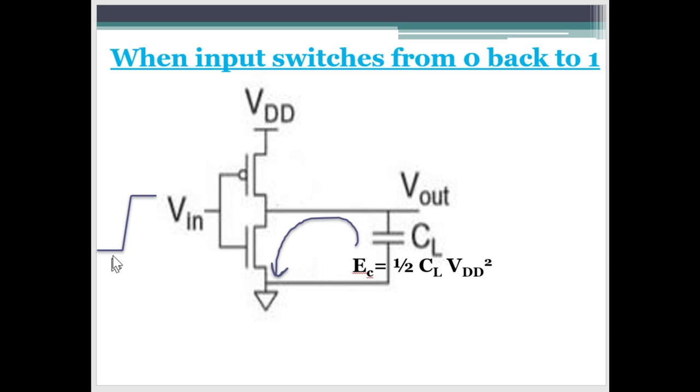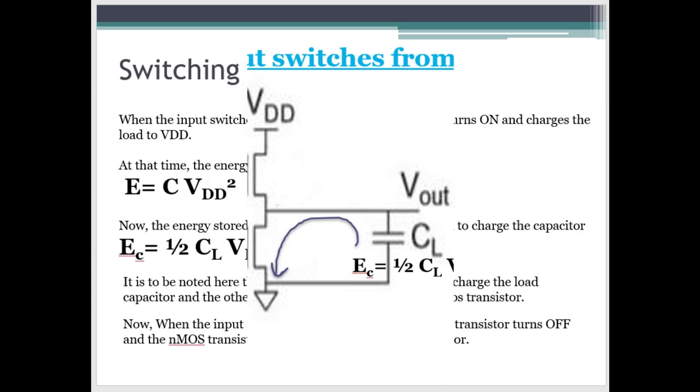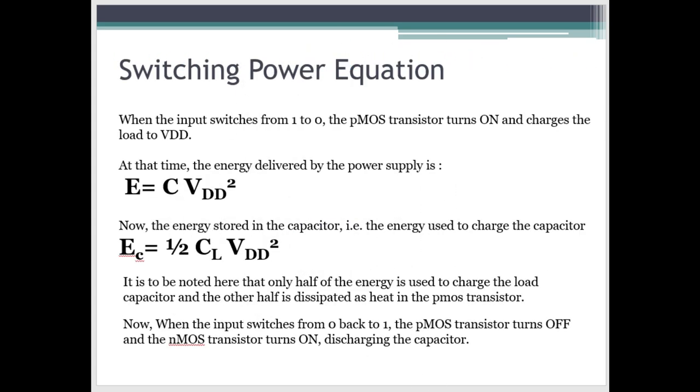And when the input changes back to 1 from 0, the PMOS turns off and NMOS turns on. And the energy which was stored in this output capacitor is discharged to 0 through NMOS. So here is the written version of whatever I explained.